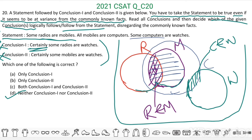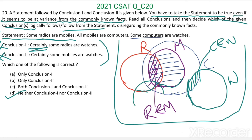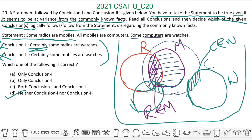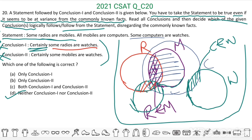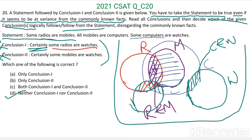Suppose we are drawing the circle for watches in a different position — here we can say some computers are watches, and also some radios are watches. So some radios are watches is only a possibility; it is not always true. Therefore, certainly some radios are watches is not a conclusion of the given statement. That is why this is wrong.